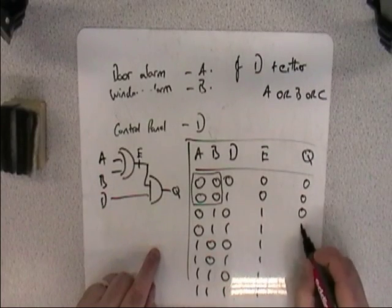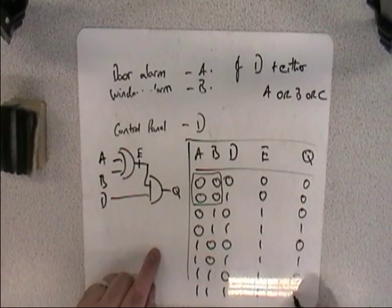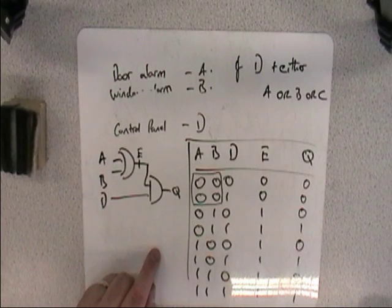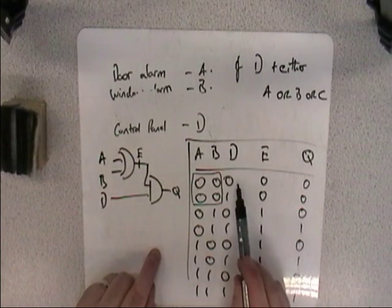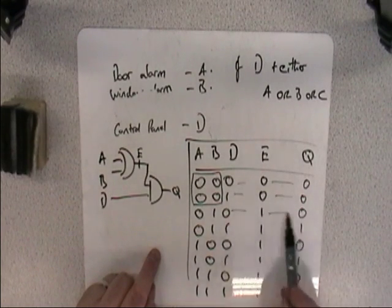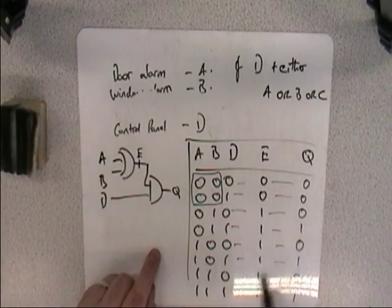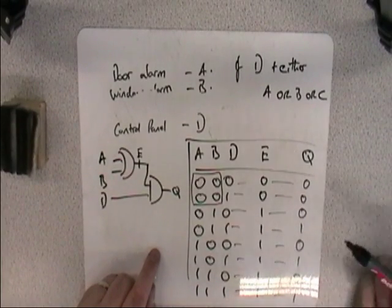And then we AND E and D. False, false, false, true, false, true, false, true. Does that look right? So that's false, false, false, true, false, true, false, true.